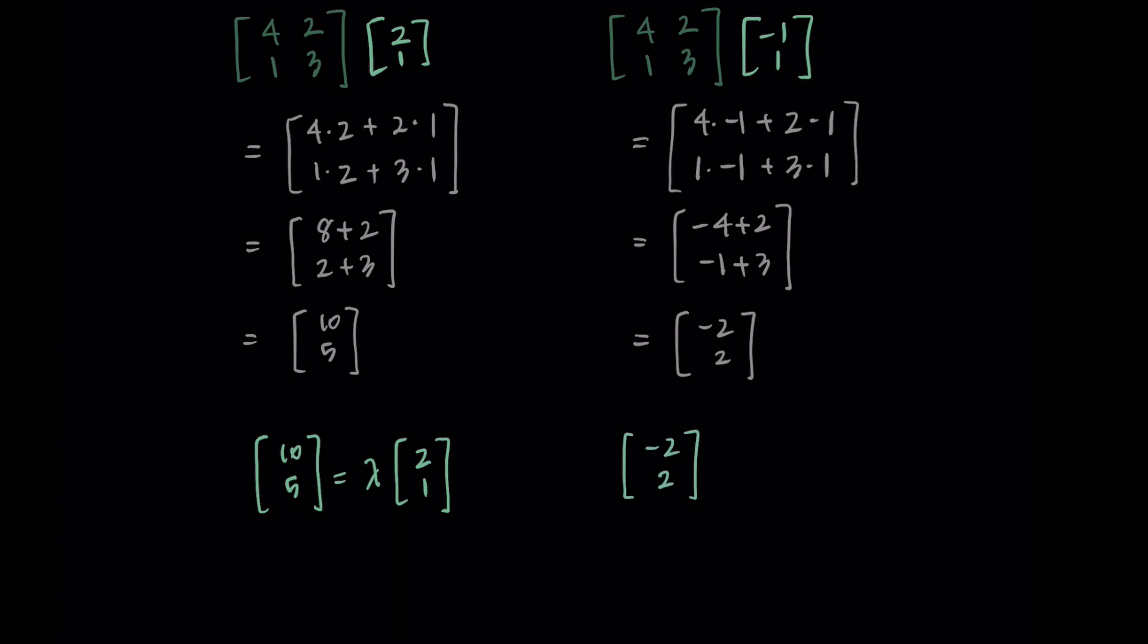We can write out some formal steps to find this, but since we know these are eigenvectors, we should be able to see what the scalar needs to be. In this first case, I'm seeing that if we multiply it by 5, so if lambda equals 5, I'm getting [10, 5], which is what we wanted.